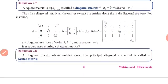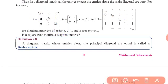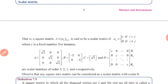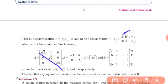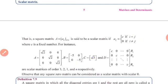Next is the scalar matrix. A diagonal matrix in which all the principal diagonal entries are equal to the same constant is called a scalar matrix. For example, if all diagonal entries equal the same constant such as √2 or −5, it is a scalar matrix.